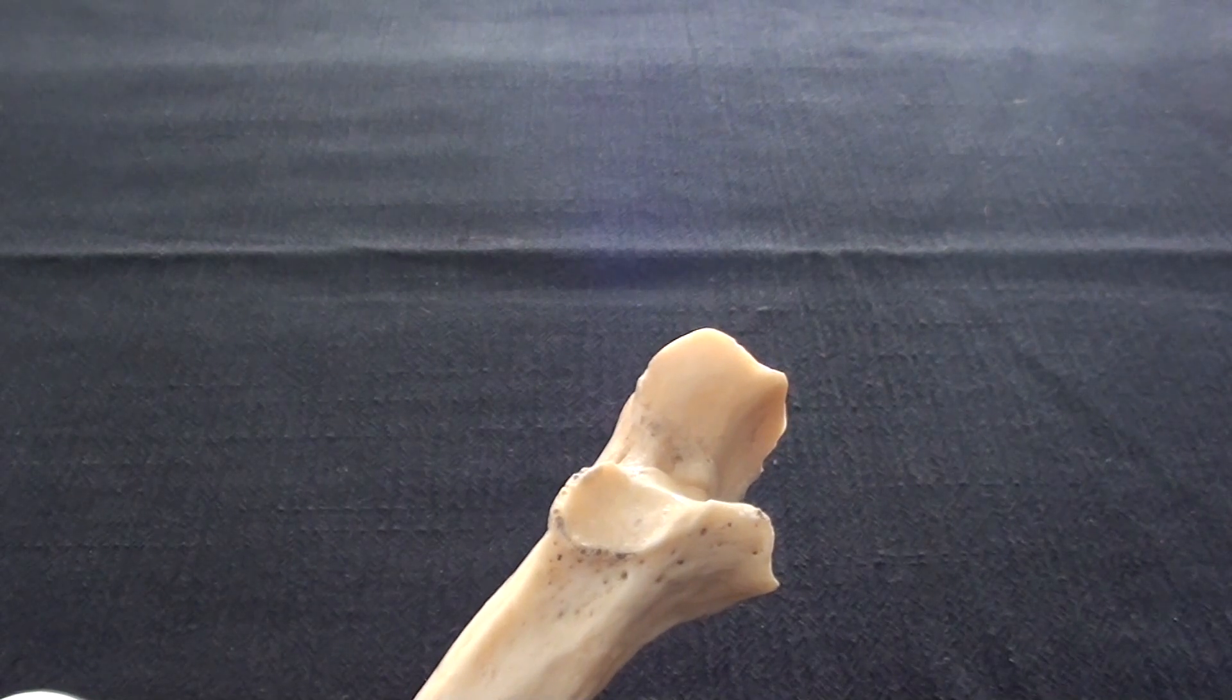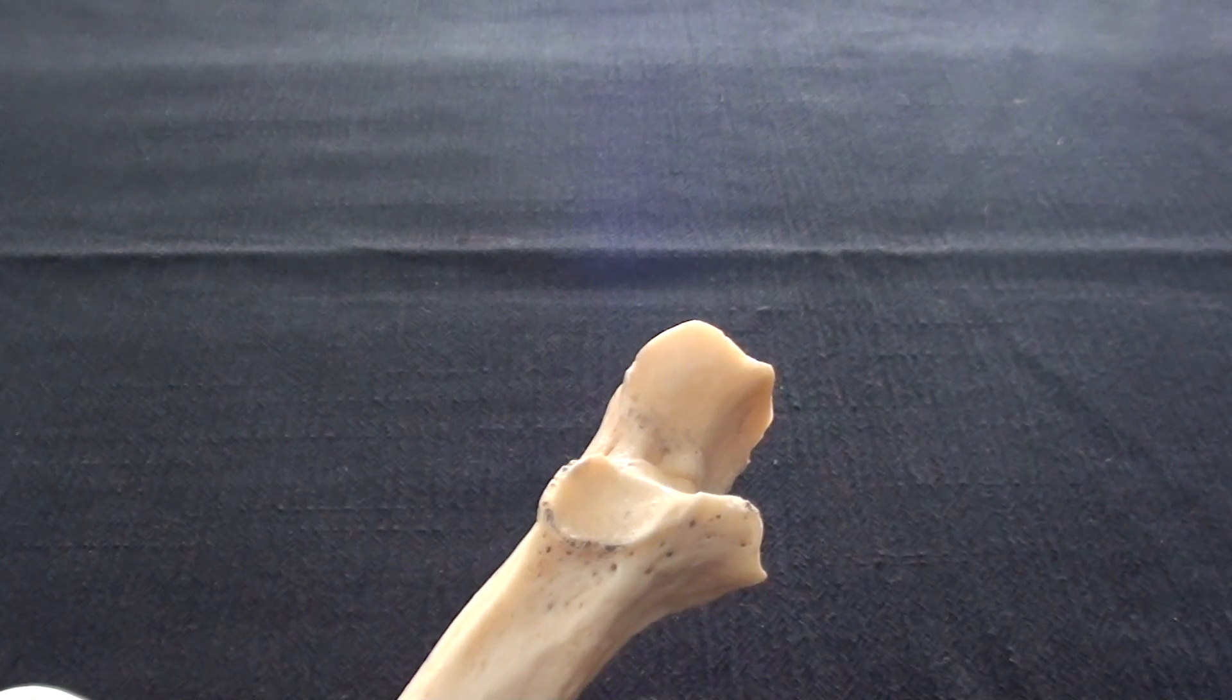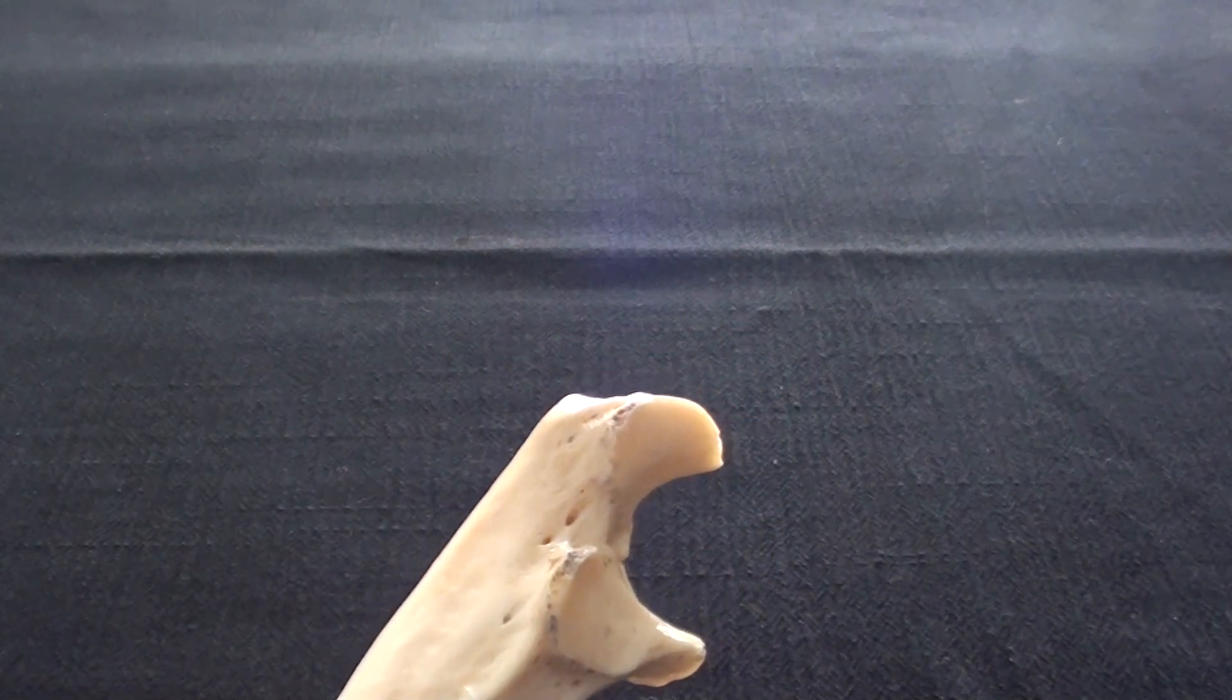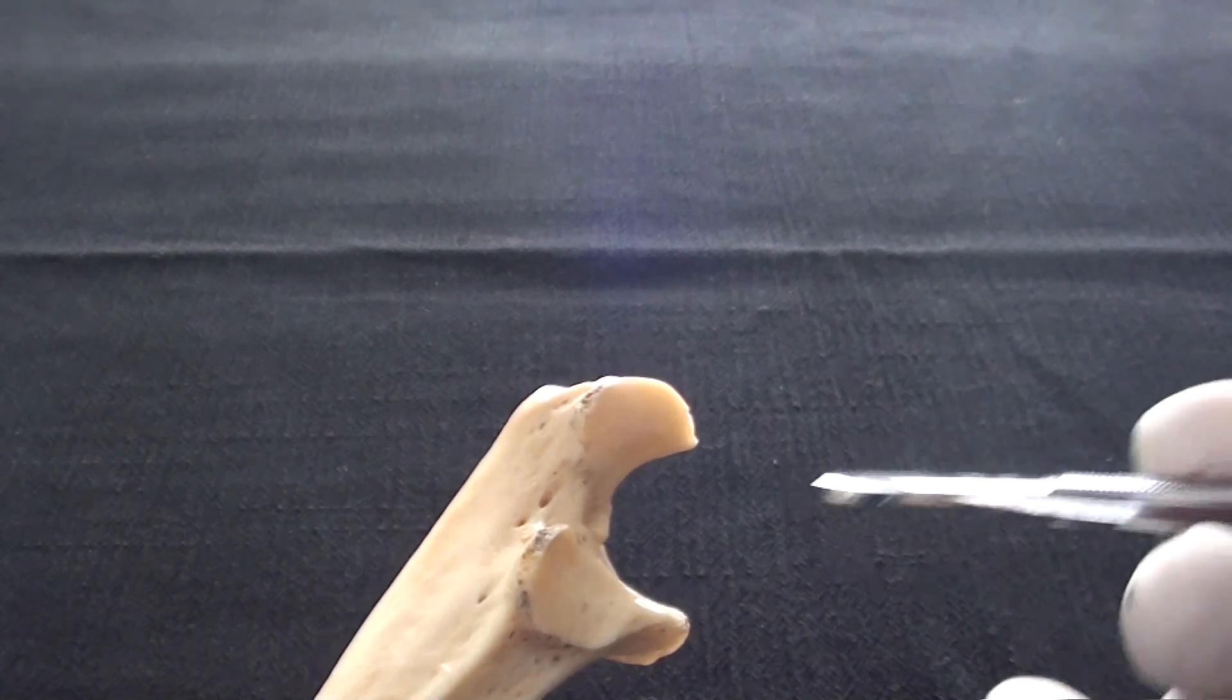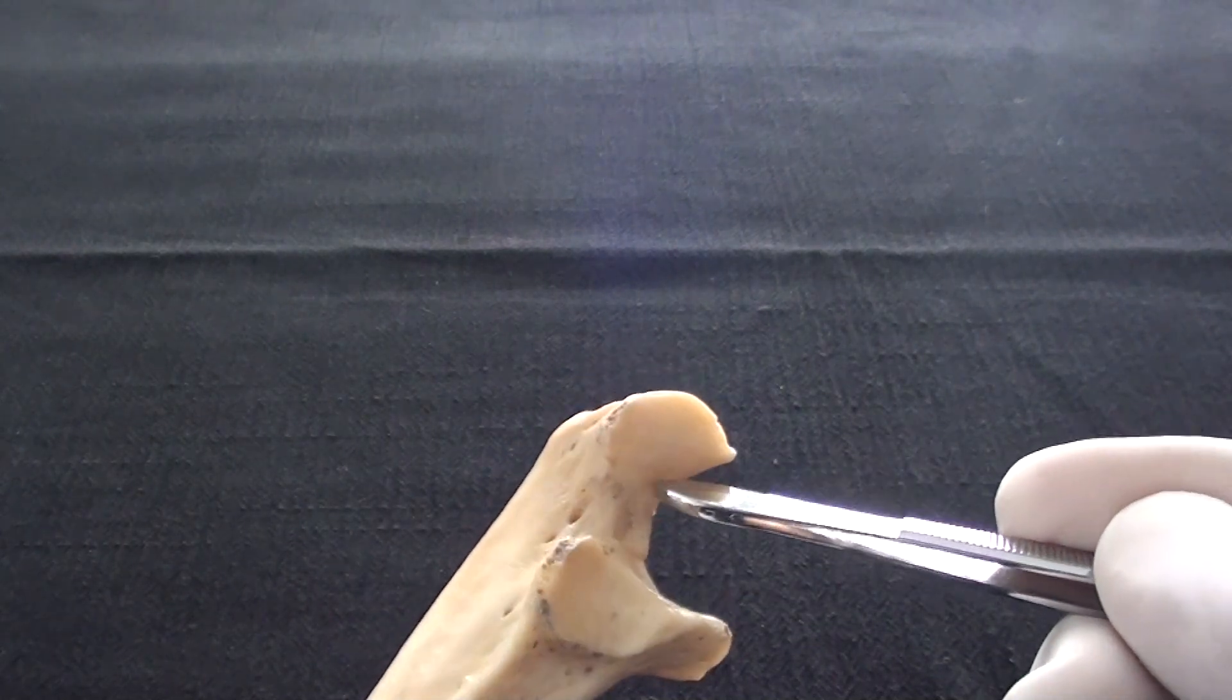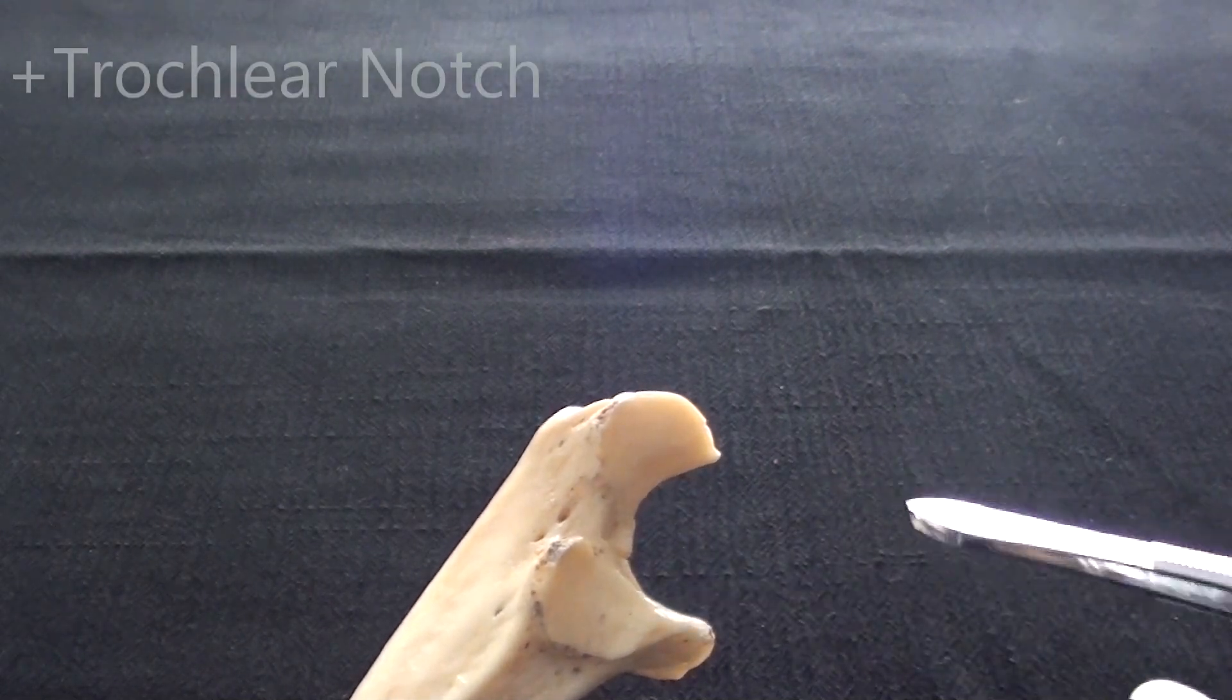Let's start the description of the ulna going from proximal to distal direction, as is frequently the case in describing long bones of the skeleton. First and foremost, what makes ulna very easy to distinguish between other bones of the skeleton is the deep C-shaped notch which will fit trochlea humeri. Therefore, this notch is simply called the trochlear notch of the ulna.